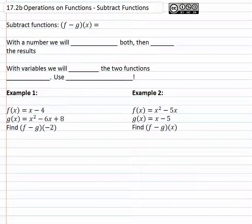In this video we're going to continue working with operations on functions, and this time we're going to subtract functions. We'll see this notation (f − g)(x). What that really means is figure out whatever f(x) is and subtract from it whatever g(x) is.